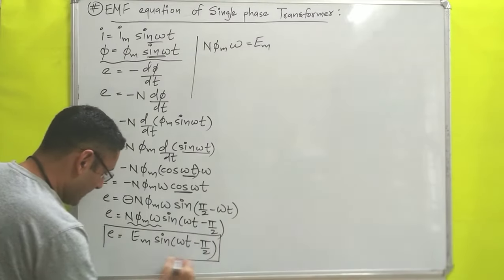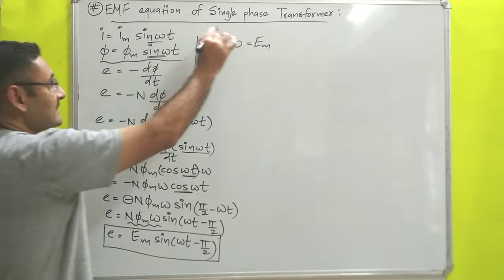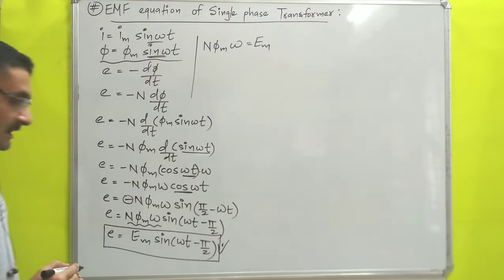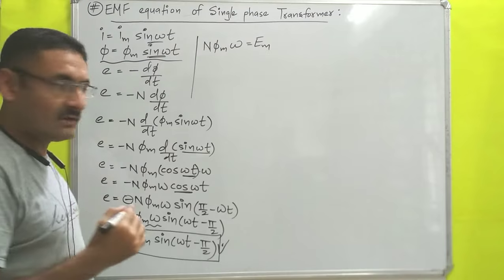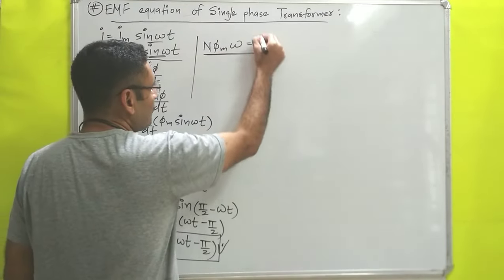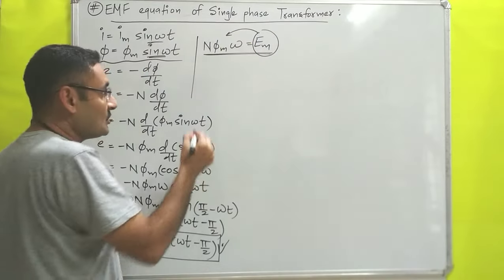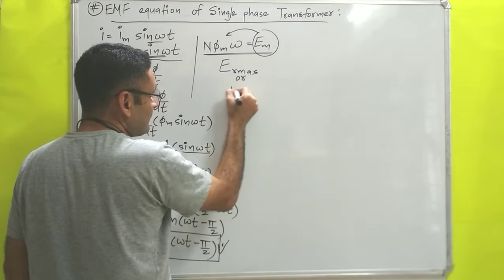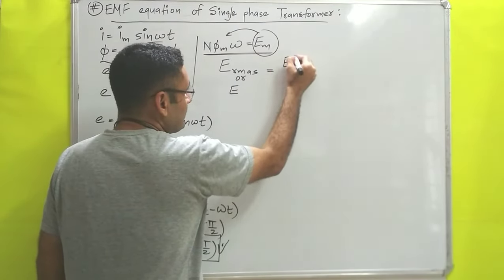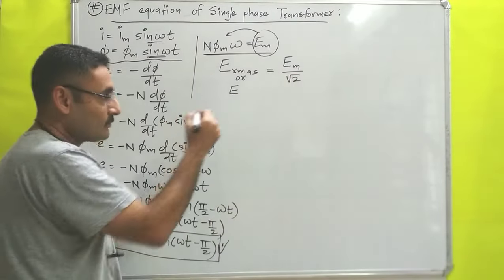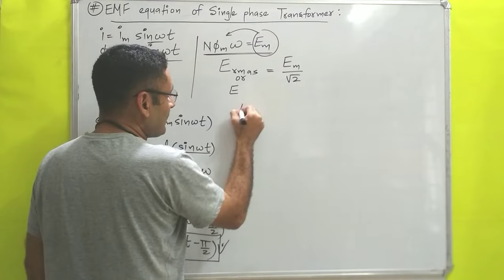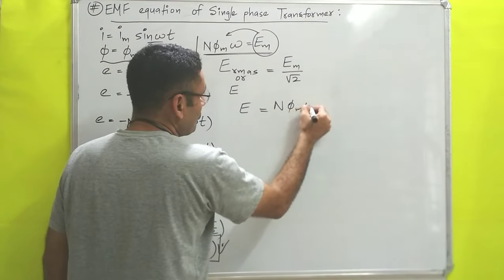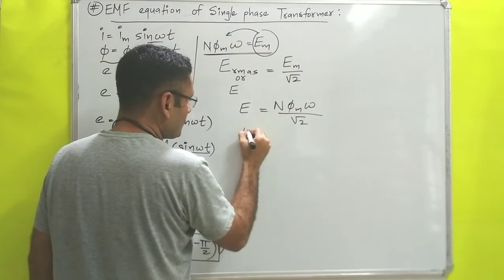That is the EMF equation for single phase transformer, and it is important to remember. Now from that we will derive the RMS value of potential. We know the maximum value of potential is Em. The RMS value of potential is Em divided by √2, as derived in previous video lectures. So E_rms = N φm ω divided by √2.